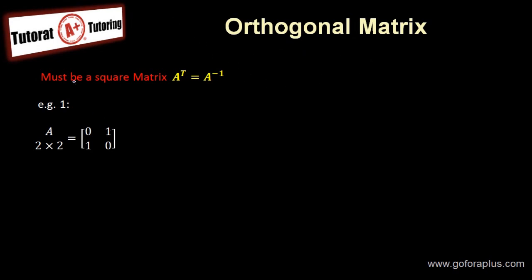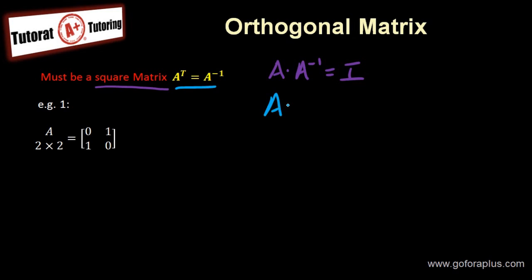Now to be an orthogonal matrix, it must be a square matrix — an n by n matrix. It has to satisfy A transpose equal to A inverse. We know that A inverse means A times A minus 1 equals I. And if A transpose equals A inverse, it means that A times A transpose is equal to I as well, so A inverse is A transpose.